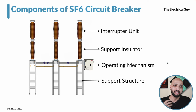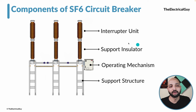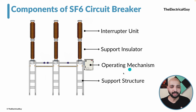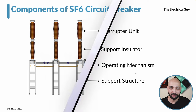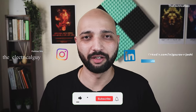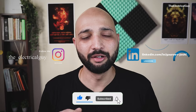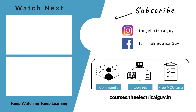Those are the main parts of the SF6 circuit breaker: the interrupter unit, which interrupts normal and abnormal currents; the support insulator, which maintains sufficient distance from live parts; the operating mechanism, which enables opening and closing operations; and the support structure, which supports the complete assembly. In the next video, we will talk about the different components of a vacuum circuit breaker. Subscribe with the bell notification turned on so you don't miss any updates.